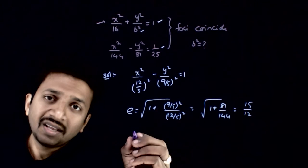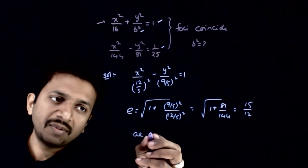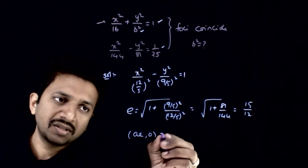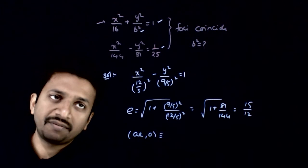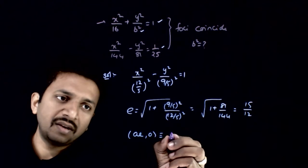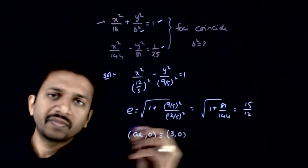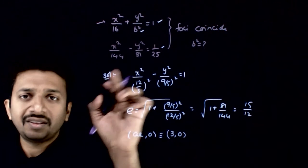Now what is the value of (ae, 0)? Because this is the focus. AE is 12/5 times 15/12. 12/5 times 15/12 is 3. So (3, 0) is the focus of the hyperbola.